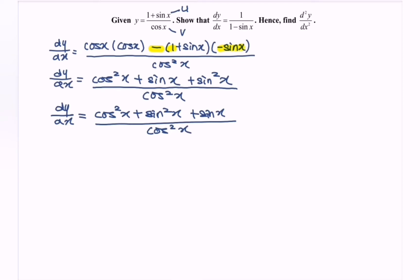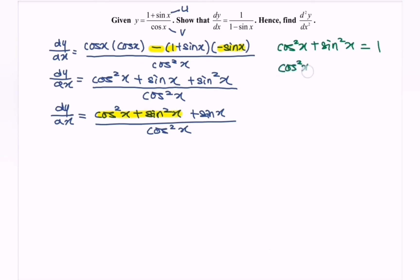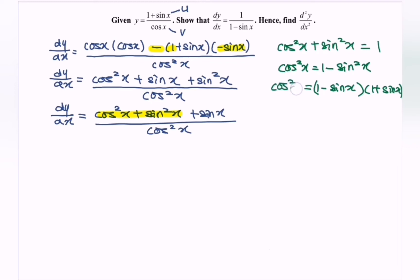Referring to the basic trigonometric identity, cos squared x + sin squared x = 1. So that term becomes 1. Next, we use cos squared x = 1 − sin squared x, and factorizing gives (1 − sin x)(1 + sin x). That is the factored form of cos squared x.